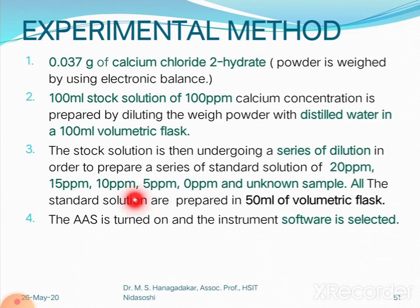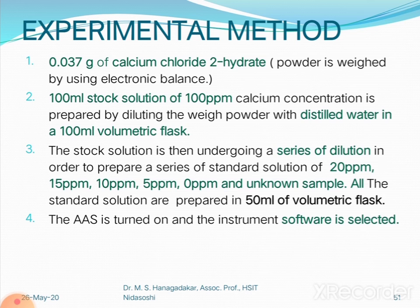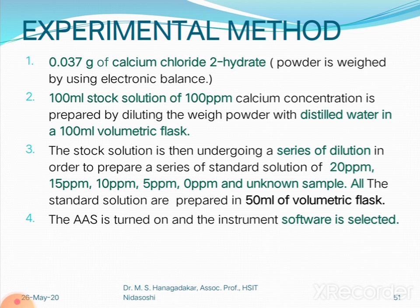All standard solutions of 20 ppm, 15 ppm, 10 ppm, 5 ppm, and 0 ppm are prepared in 50 ml volumetric flasks by taking known volumes of the 100 ppm stock solution. Step four: the atomic absorption spectrophotometer is turned on and the appropriate software is selected, since the instrument is software-operated.